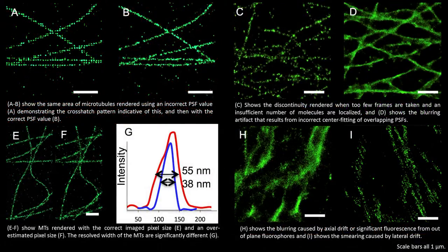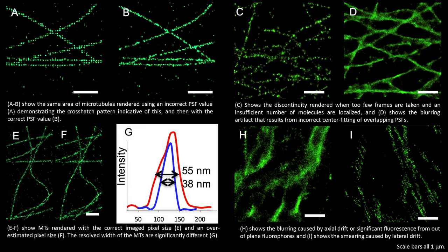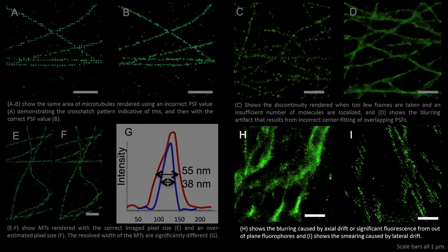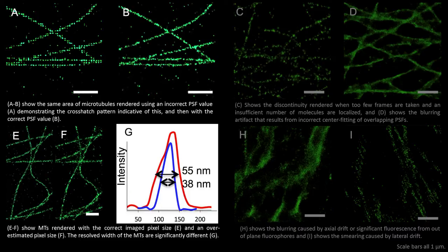In the article we also discuss several different kinds of sample measurement and rendering based artifacts and show how they can be detected using a known structure such as microtubules. For example axial and lateral drift artifacts and the errors caused by inputting an incorrect point spread function or pixel size.